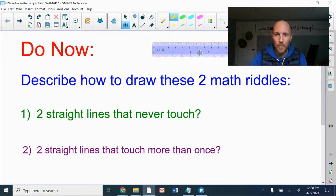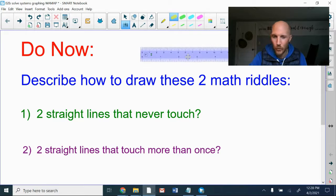And riddle number two, two perfectly straight lines, like drawn with a ruler, that touch each other more than once.